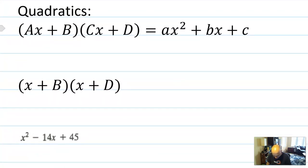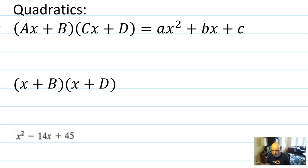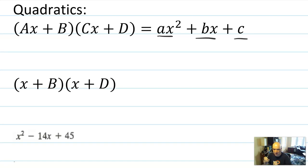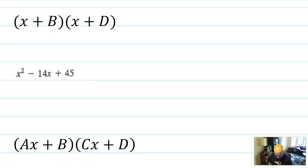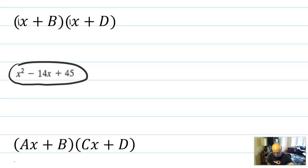Speaking of quadratics, let's talk about them. Quadratics are the main thing you factor — probably when you think about factoring you're thinking about factoring quadratics. Quadratics are things of degree 2. We often write them in polynomial form as AX squared plus BX plus C. If you were to factor that into two degree-one binomials, those would have coefficients I'll call big A, big B, big C, and big D to keep things straight.